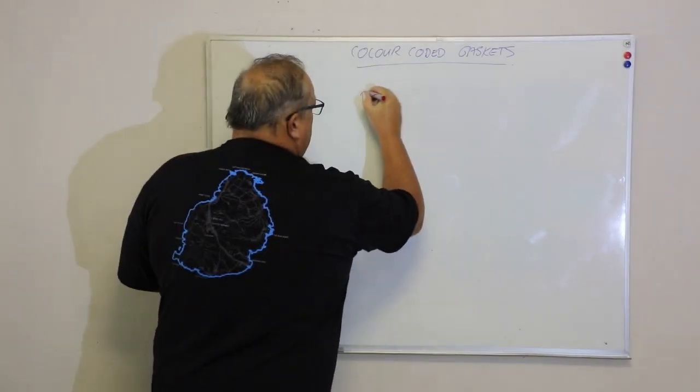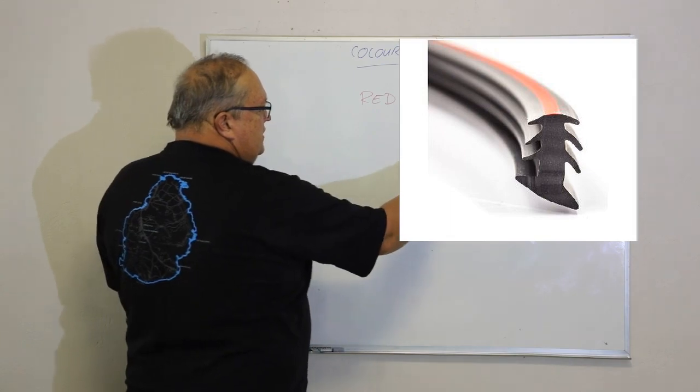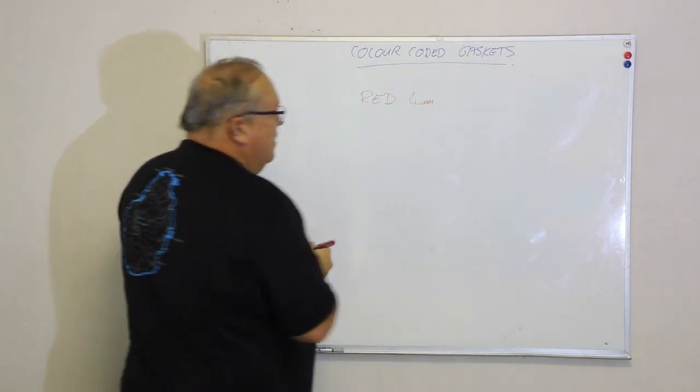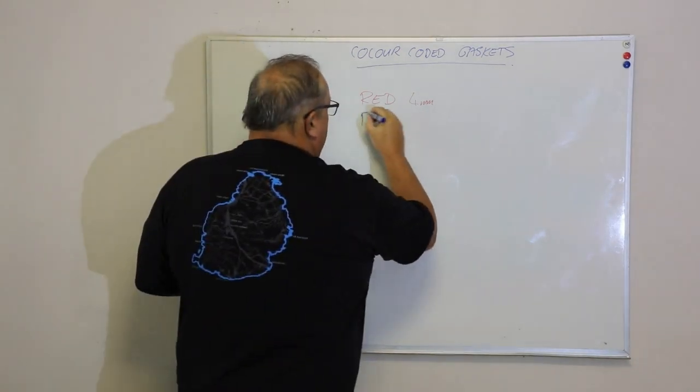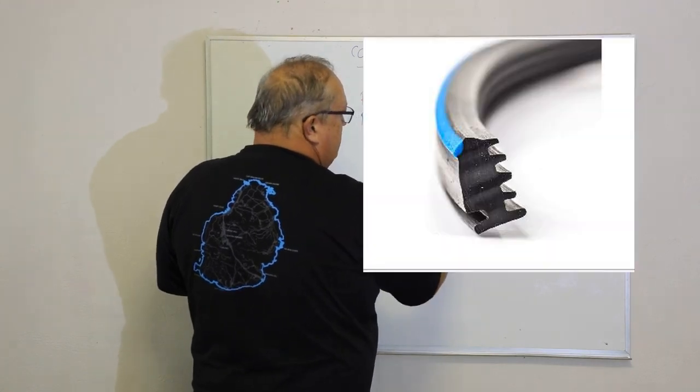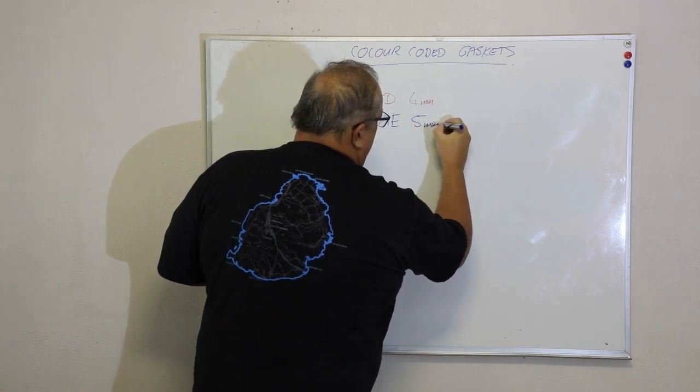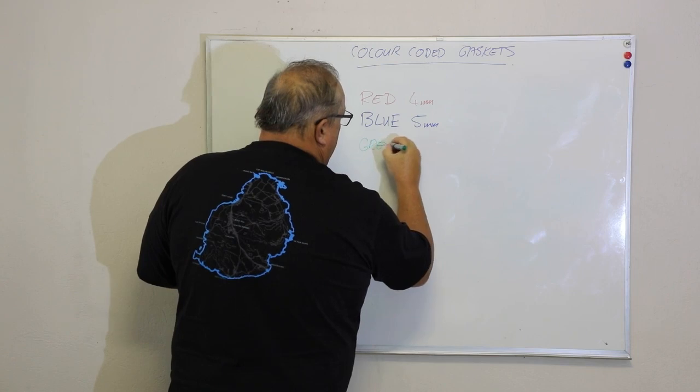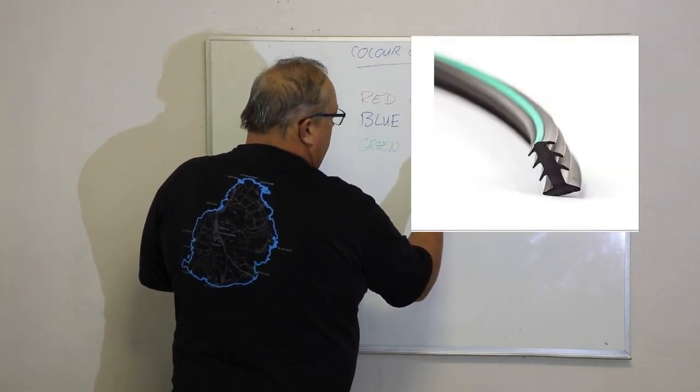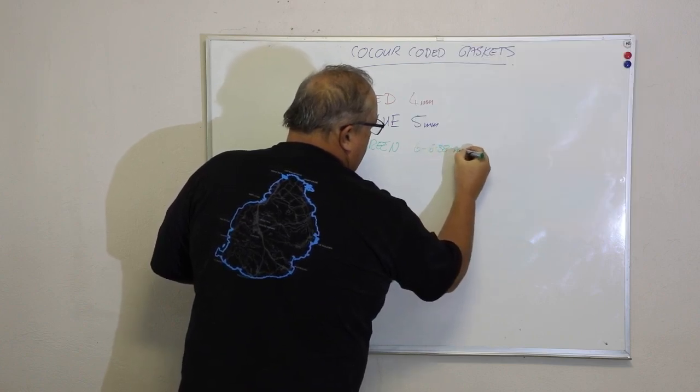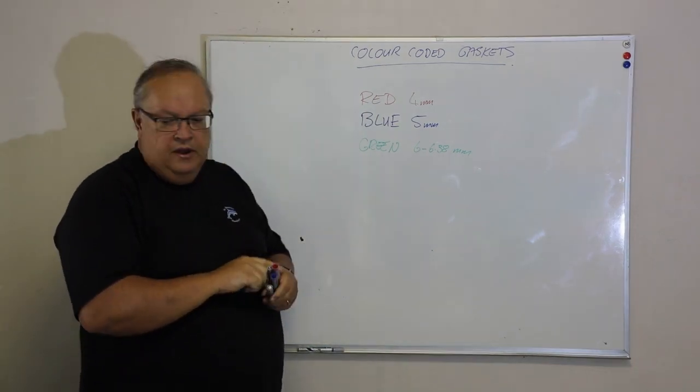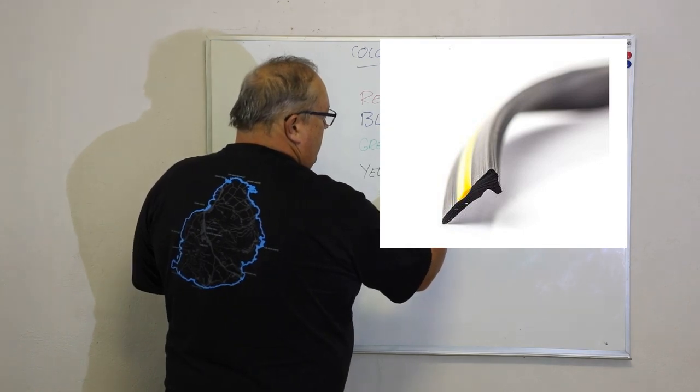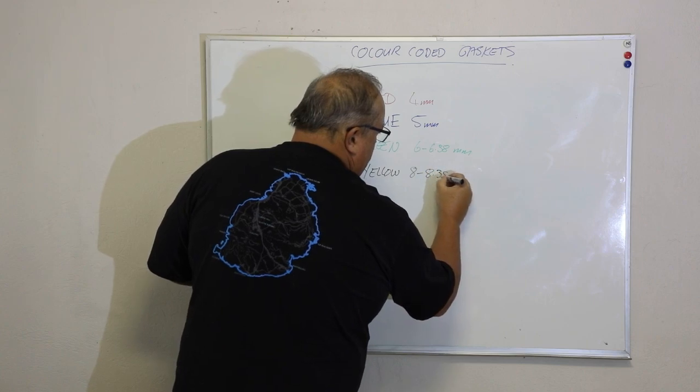So, let's have a look at what that range consists of. We start off with a red gasket, which is suitable for 4mm glass. Then we have a blue gasket, which is suitable for 5mm glass. We then have a green gasket, which is suitable for 6mm and 6.38mm glass. And finally, we have a yellow gasket, I can't draw in yellow, so I'll just use black, which looks like this, and that gasket is suitable for 8mm to 8.38mm glass.